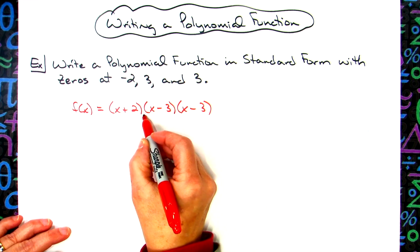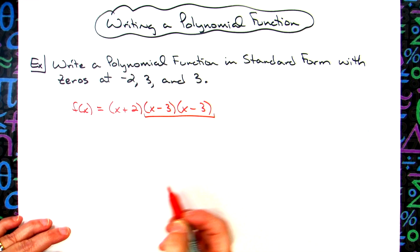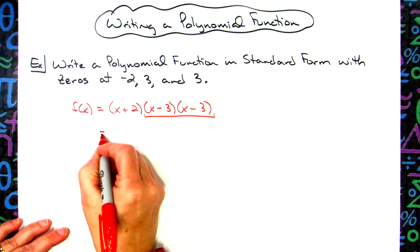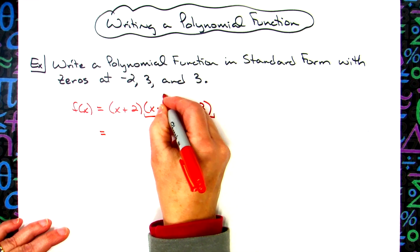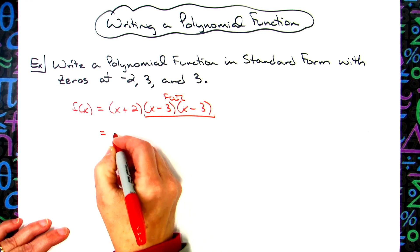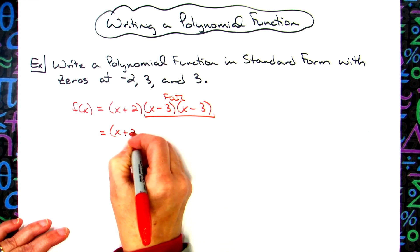Now, easiest way to do this is to take any two of them. I think I'm going to choose those two, and then I'm going to foil those out. So initially this x plus two is just going to stay put.